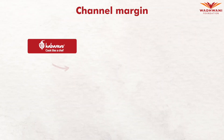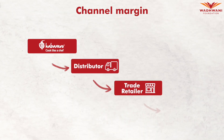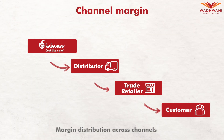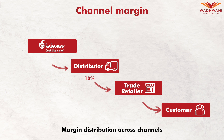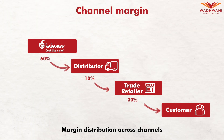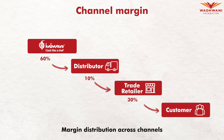This is an example of channel margin. If I go through a general trade retailer, I give my distributor 10% and the distributor gives the retailer 30% — that's 40% gone. I am left with 60%, and with that 60% I need to make sure that my margins work out.